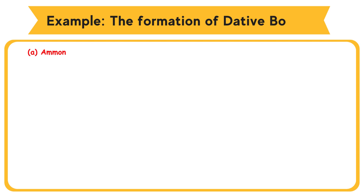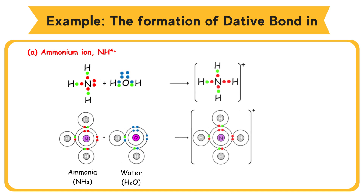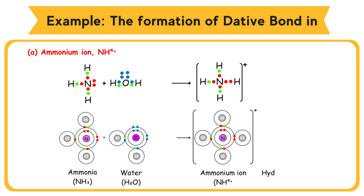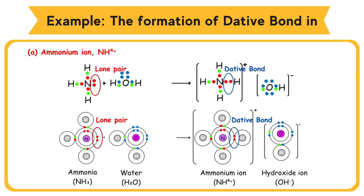Example: the formation of Dative Bond in Ammonium Ion. Ammonium molecule dissolves and ionizes in water to form Ammonium Ion and Hydroxide Ion. Nitrogen atom in the Ammonium molecule has one lone pair of electrons. Nitrogen atom contributes its lone pair electrons for sharing with hydrogen ion, which is transferred from a nearby water molecule to the Ammonium molecule.